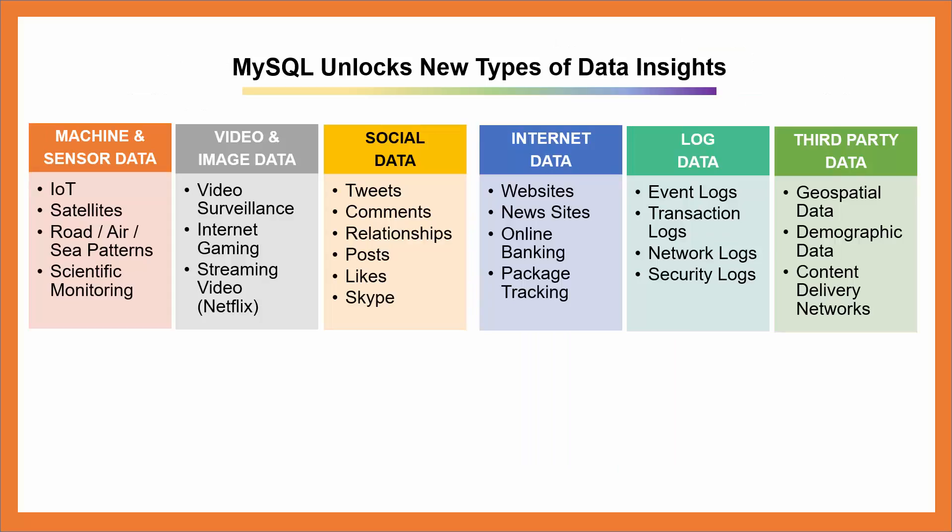Today, there are many types of data producers — meaning what produces data. A very short list of data producers is shown on this slide in each header, with examples listed below each header. The first column gives you examples of machine and sensor data, such as the Internet of Things or IoT, satellites, road, air and sea patterns, and scientific monitoring.